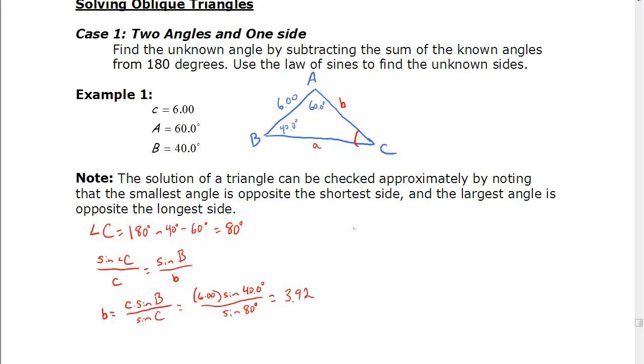Finally, we need to find side A, and to do that we're going to start with sine of angle C, or sine of C over C. But now for A, we need sine of A over A. Again, we cross-multiply and solve for A. We get C sine A over sine C. Plug in the values we know: 6.00 times the sine of 60 divided by the sine of 80, and that gives us 5.28 for side A.